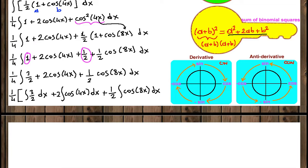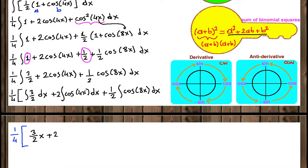Now we integrate each integral. We have one fourth in front. The anti-derivative of three over 2 with respect to x is three over 2 times x, since it's a constant and the anti-derivative of a constant cx is cx. So that gives us three over 2 x.